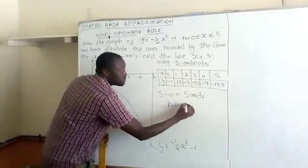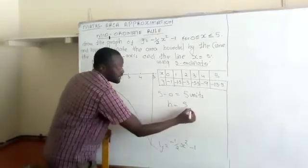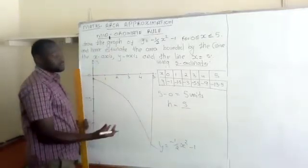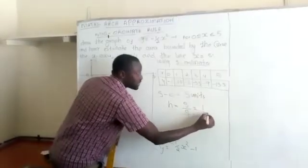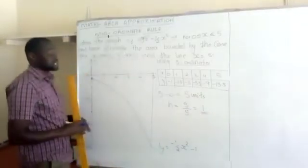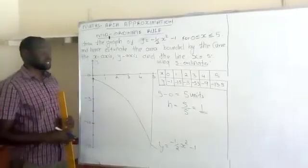h will be the 5 units that we've got divided by the number of rectangles that we need, which are 5. So we're going to have a width of 1 unit.